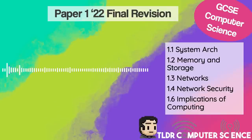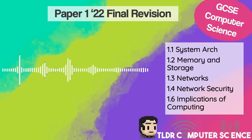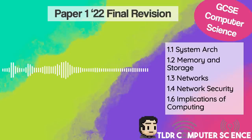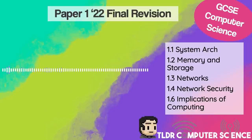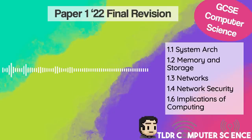A bit of a different video this time. This is a video in final preparation for the Summer 22 Advanced Guidance Paper for GCSE Computer Science. We won't be covering 1.5, but we'll be looking over 1.1, 1.2, 1.3, 1.4, and 1.6, finding exam questions that match up to the guidance. This is a good one-stop place to get ready before the final exam. We're going to go through each exam question, kicking off with 1.1 now.